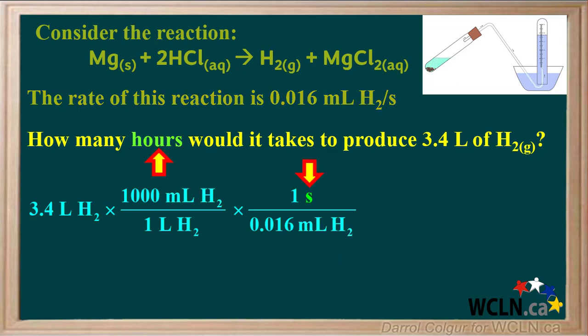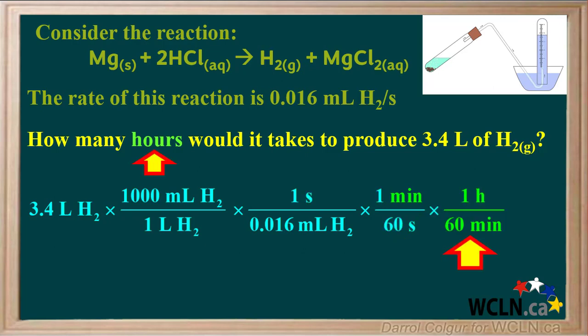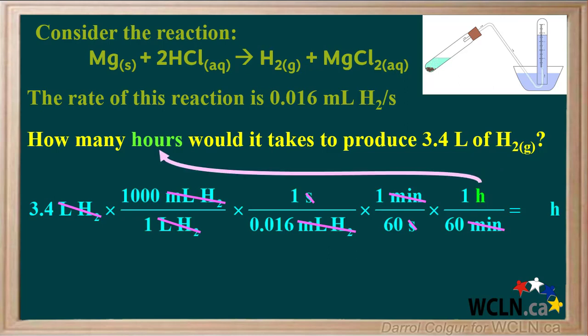If we stopped here, we would get the time in seconds. But in the question, we're asked for time in hours. We can change seconds to minutes by multiplying by the conversion factor 1 minute over 60 seconds. The unit seconds will cancel and we'll be left with minutes. Finally, to convert minutes to hours, we can multiply by the conversion factor 1 hour over 60 minutes. In this way, the minutes will cancel and we'll be left with hours on top, which is the unit we want in our answer. So we can cancel out liters of hydrogen, milliliters of hydrogen, seconds, and minutes, leaving us with the unit hours.